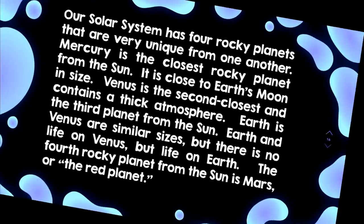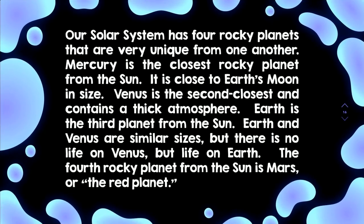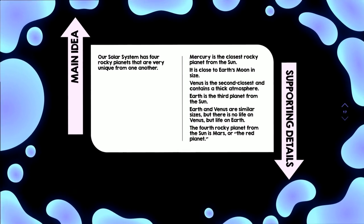Let's take a look at the next paragraph. Our solar system has four rocky planets that are very unique from one another. Mercury is the closest rocky planet from the sun. It is close to Earth's moon in size. Venus is the second closest to the sun and contains a thick atmosphere. Earth is the third planet from the sun. Earth and Venus are similar sizes, but there is no life on Venus, but life on Earth. The fourth rocky planet from the sun is Mars, or the red planet. Now, we can look at this graphic organizer and see that the main idea is identified as that first sentence: Our solar system has four rocky planets that are very unique from one another. Mercury is the closest rocky planet from the sun, so that is the first supporting detail.